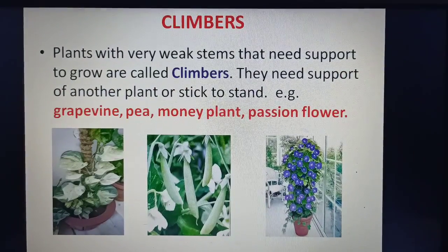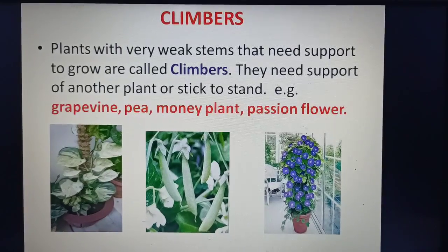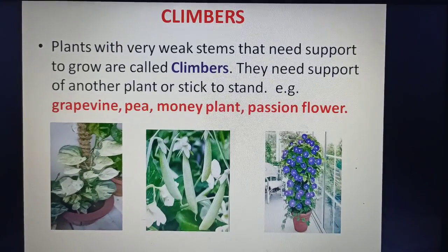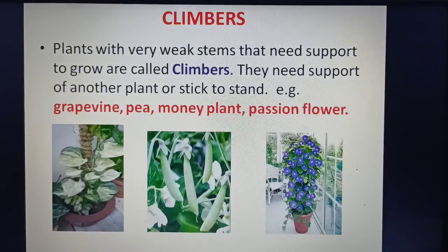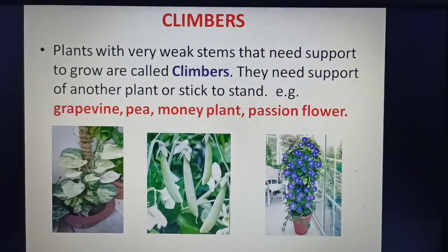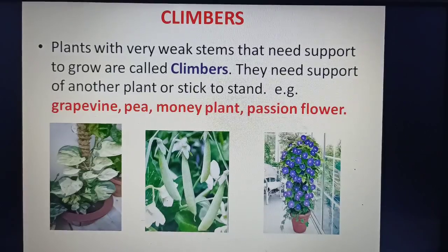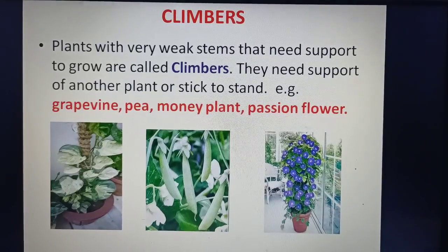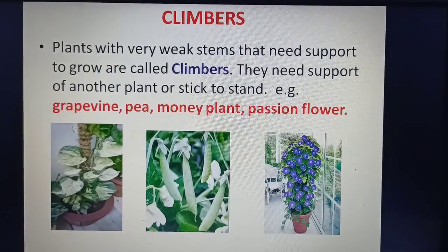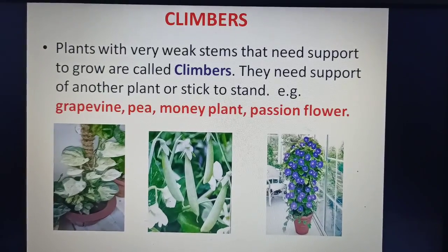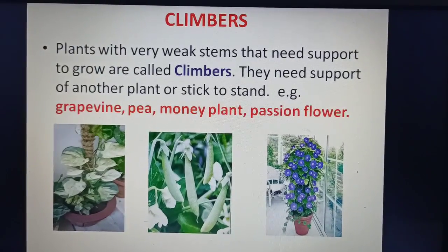Climbers: Plants with very weak stems that need support to grow are called climbers. They need the support of another plant or a stick to stand. Examples of climbers are Grapevine, Pea, Money Plant and Passionflower.